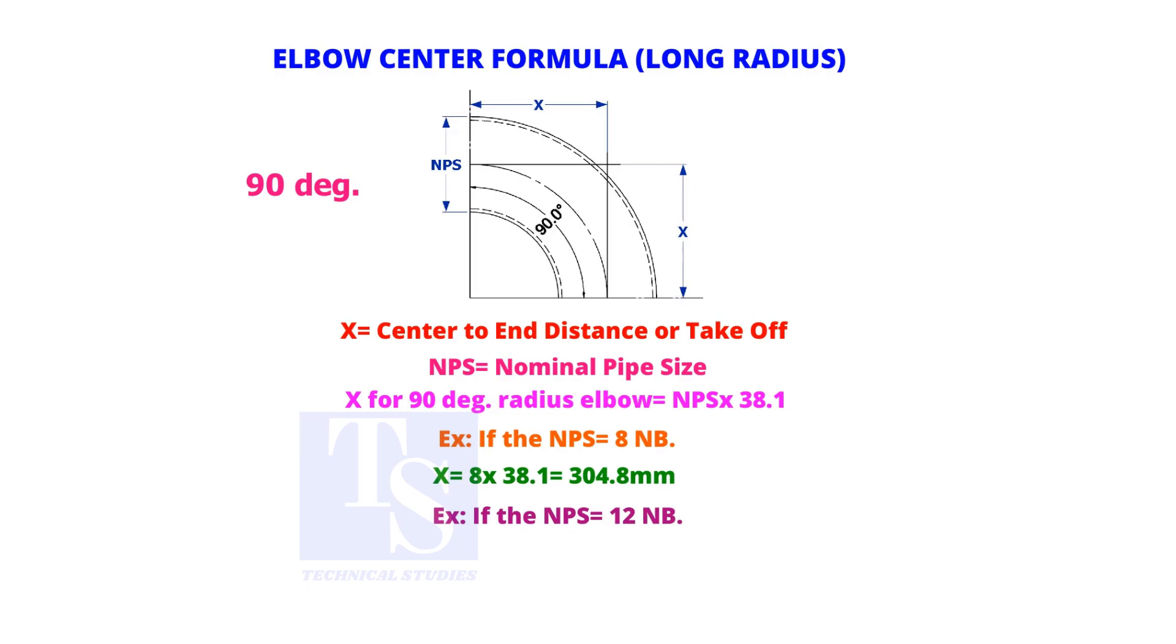Similarly, if the elbow nominal pipe size is 12 inches, multiply 12 by 38.1. The take-off length is 457.2 millimeters.